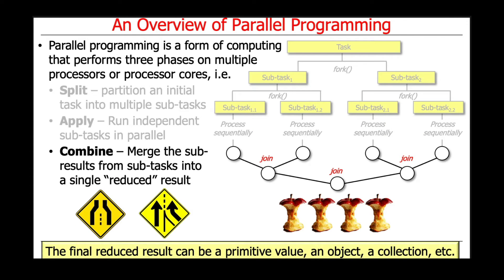The third and final phase is to merge the subresults from all the subtasks that have been running in parallel into a single reduced result. We start by doing pairwise joining from each of the subtasks, and then join again and again — sort of like a tree — until we end up with one final reduced result. This final reduced result can be a primitive like a long or a string, or it could also be a collection like a list, an array, a map, or a set.